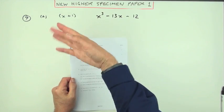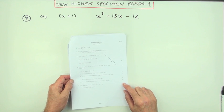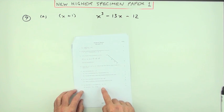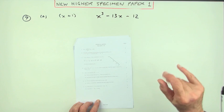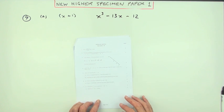So number seven then from this new higher specimen paper number one, here we go. Factorizing a cubic expression, it's not an equation, so no equal to zeros appearing here, you'll even get penalized probably.